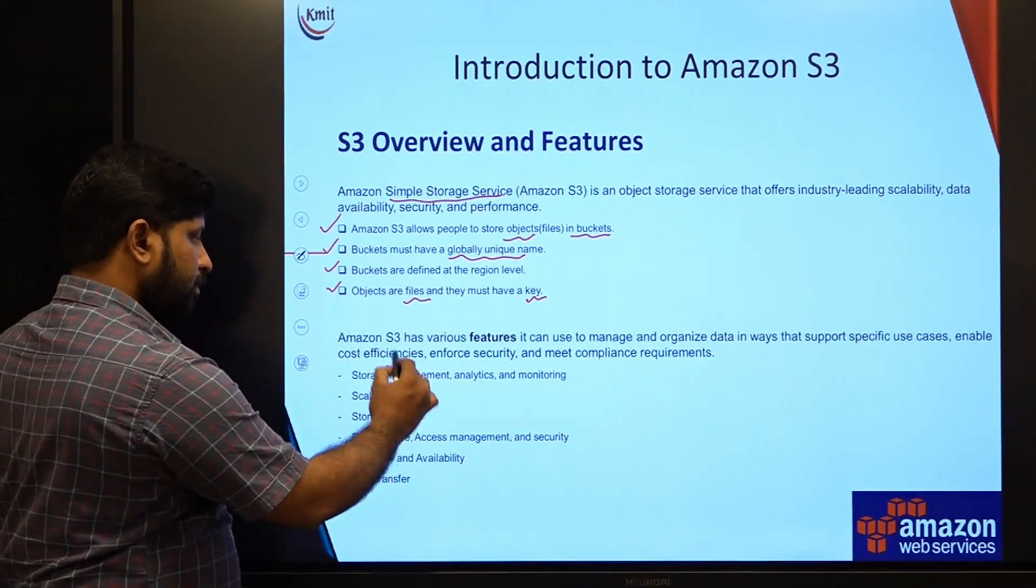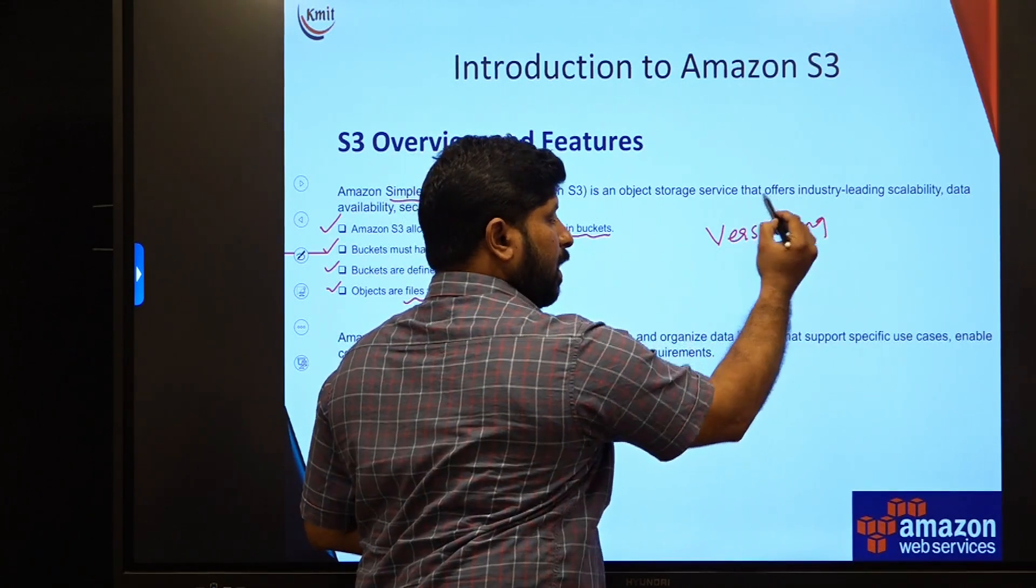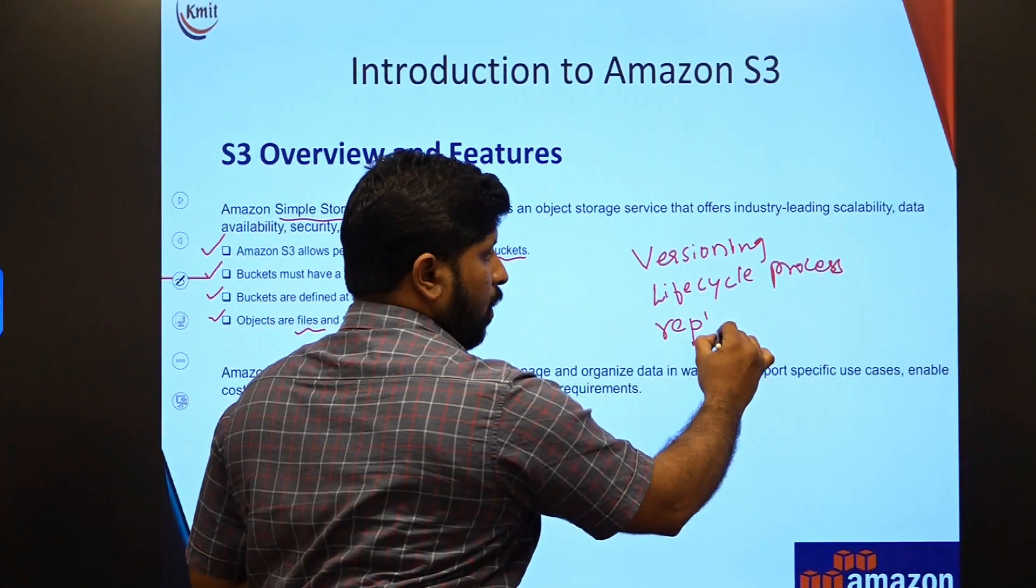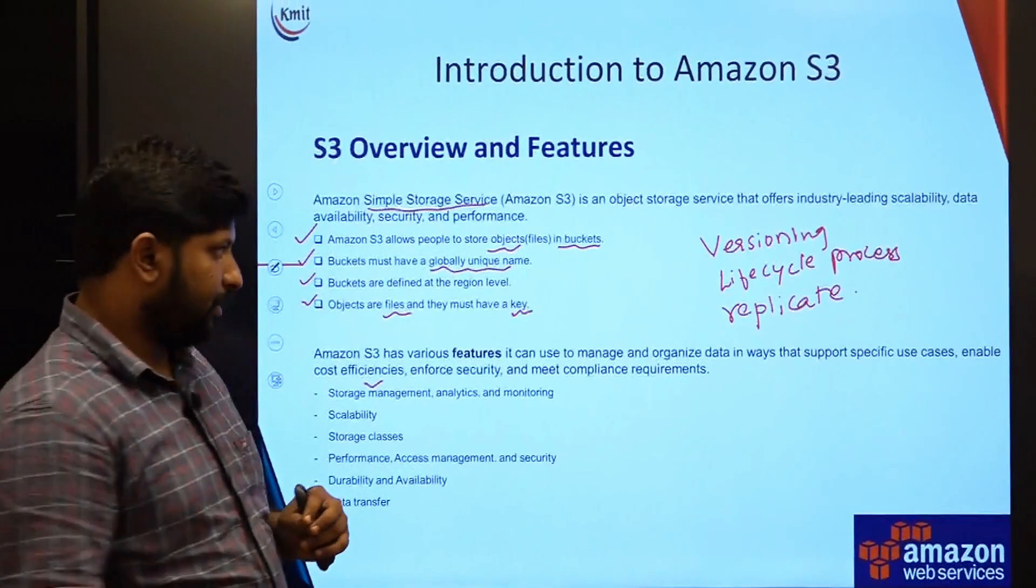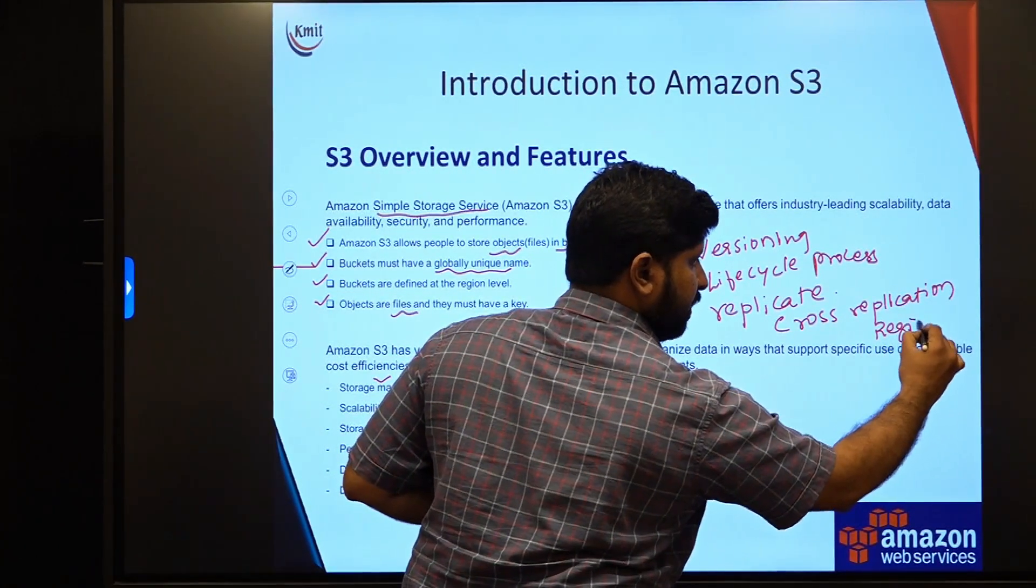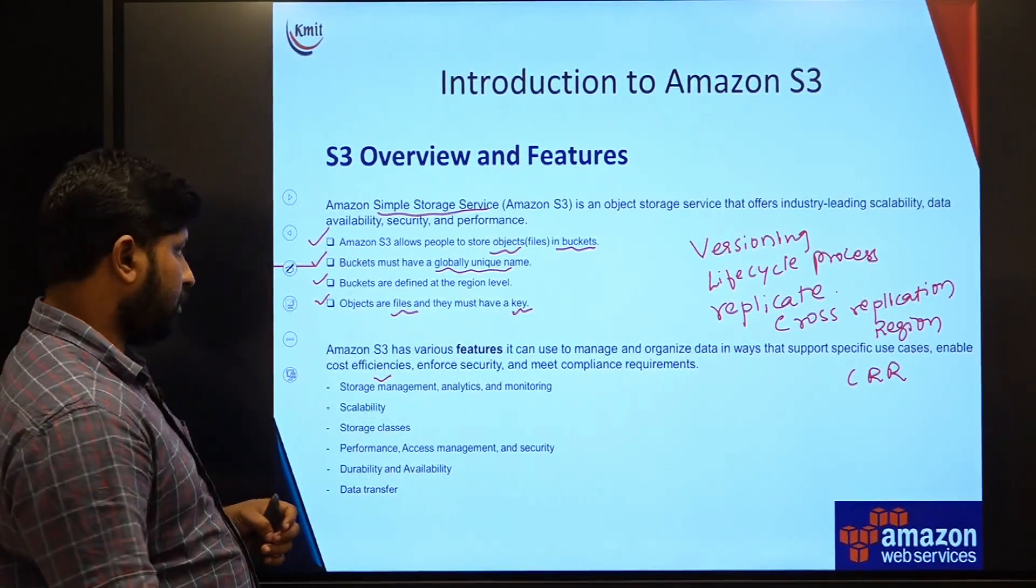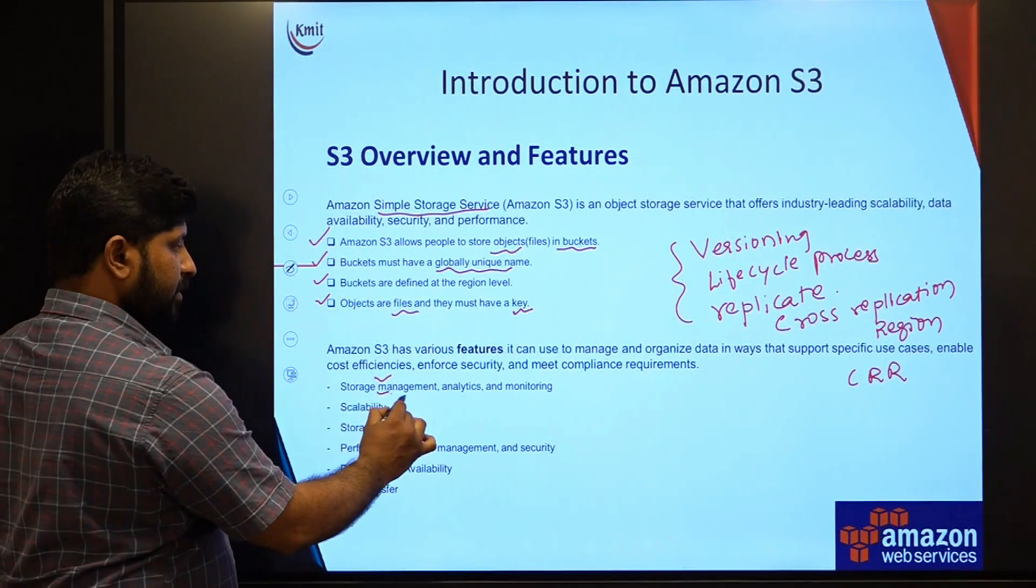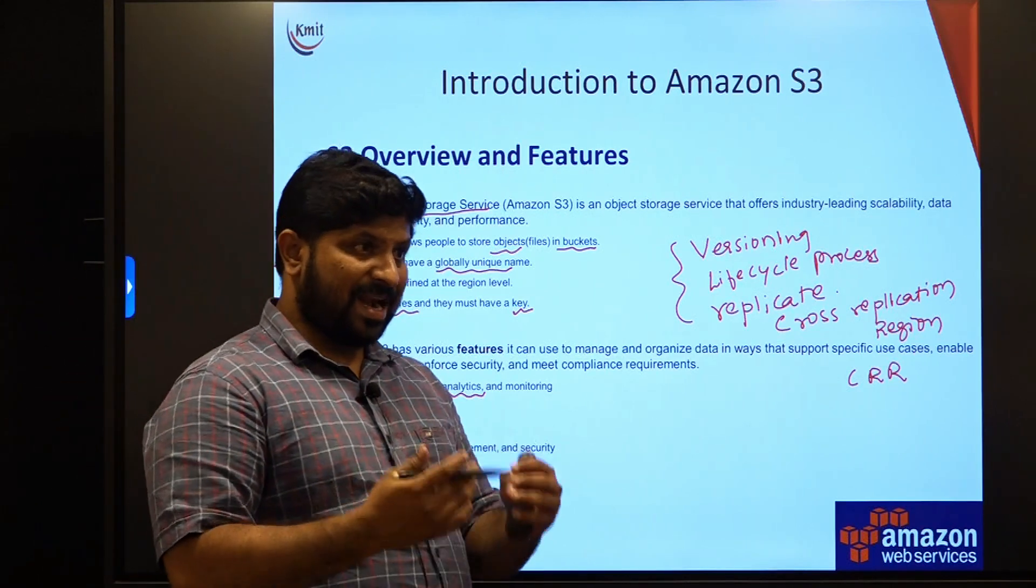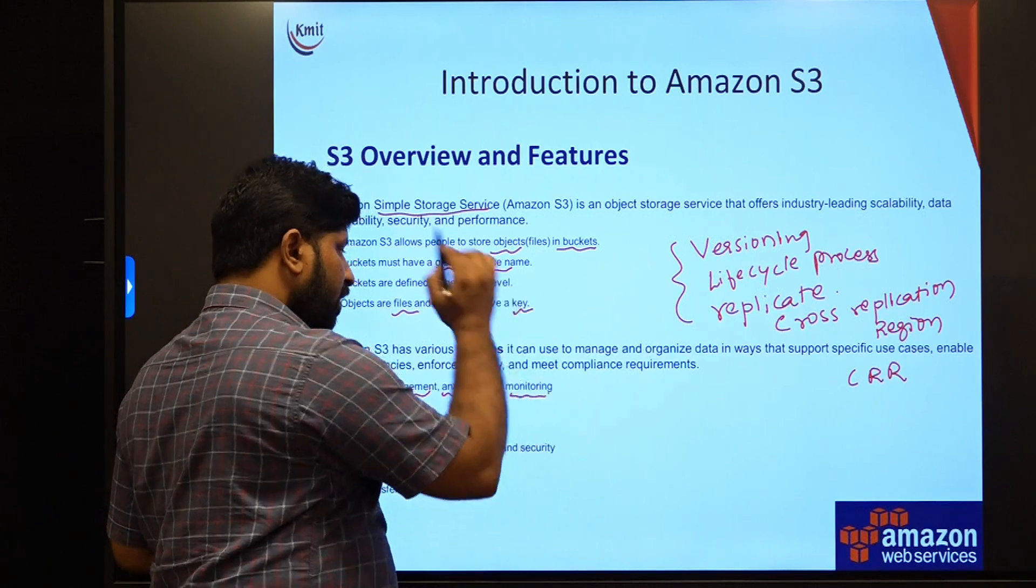Coming to the features, it has best storage management where it can have versioning as we had discussed. Not only that, it will have a lifecycle process also for managing the data, and it will replicate the data across the regions, which we can say as cross region replication, which can be said as CRR. Cross region replication for low latency, we can adopt this particular mechanism. All these three are used for managing the data at storage level. Not only that, even S3 can be accommodated with various services, where analytics comes into picture, where big data can be stored under S3 and they can be used instantly using various services of AWS.